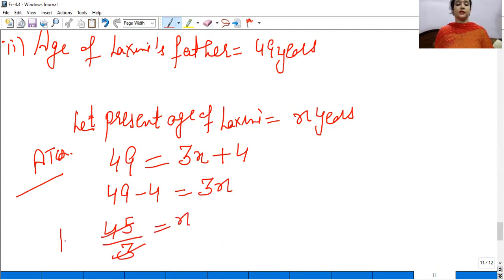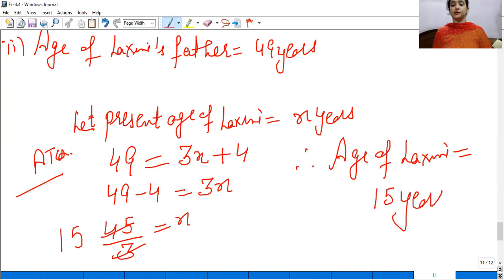So 3 divided gives 45 divided by 3, so x which is Lakshmi's age, therefore age of Lakshmi, present age of Lakshmi is equal to 15 years. This is the present age, when her father is 49, then Lakshmi is 15 years.